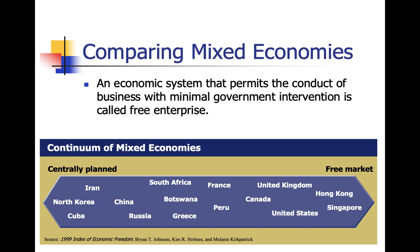In a mixed economy, the concept of free enterprise is key — you can own your own business. Yes, you need a business license and government notarization, but ultimately you can open a business, create an Etsy marketplace, an Amazon or eBay account, and sell things on your own. The government is generally not going to get involved in those transactions.